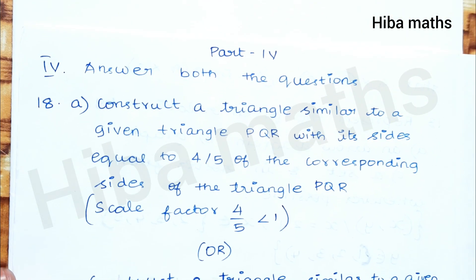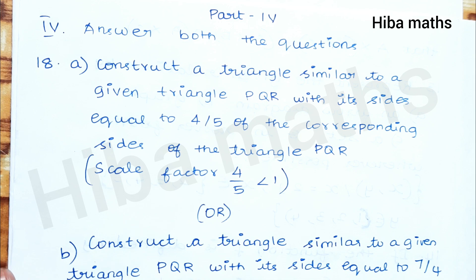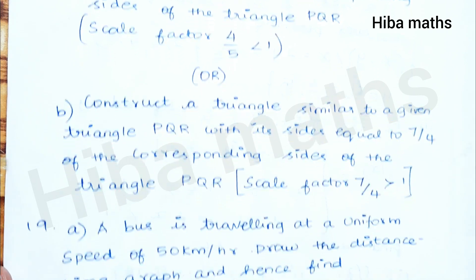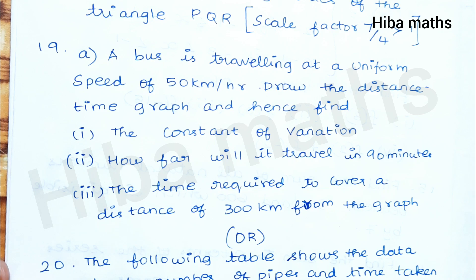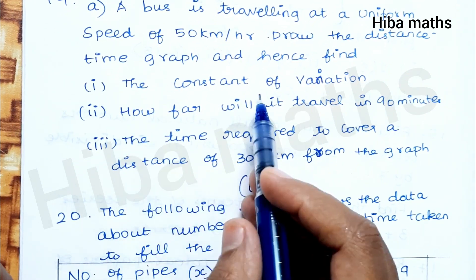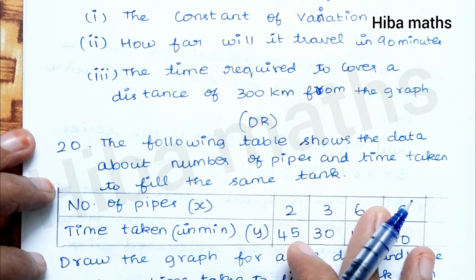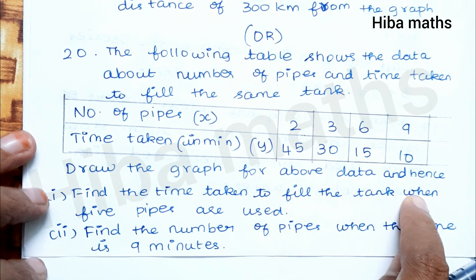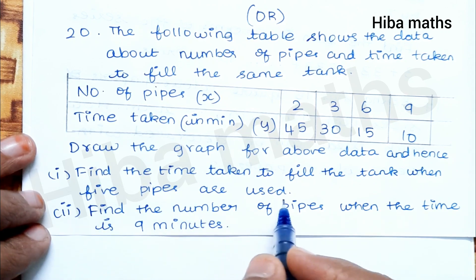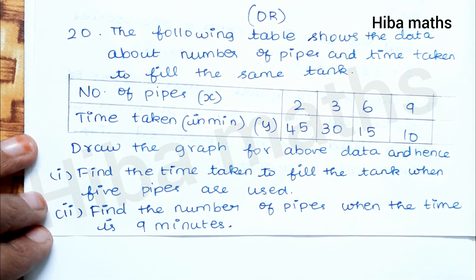Next, Part 4: Answer both questions. First, construct a triangle similar to a given triangle with ratio 4/5, known as 7/4. This is an A-type question. For the 19th question, a bus is traveling at a uniform speed of 50 km/h. Draw a distance-time graph and hence find the constant of variation, how far it will travel in 90 minutes, and the time required to cover a distance of 300 km from the graph. So, in the table column, we plot the graph.